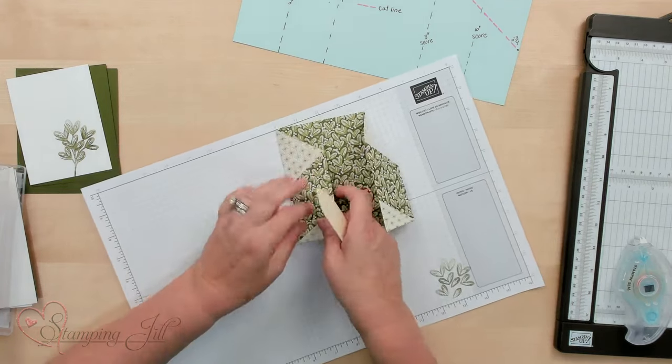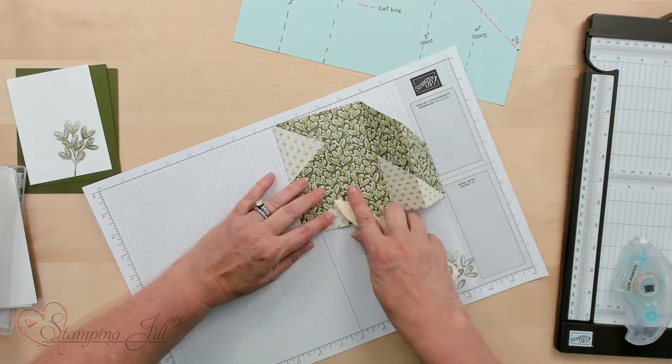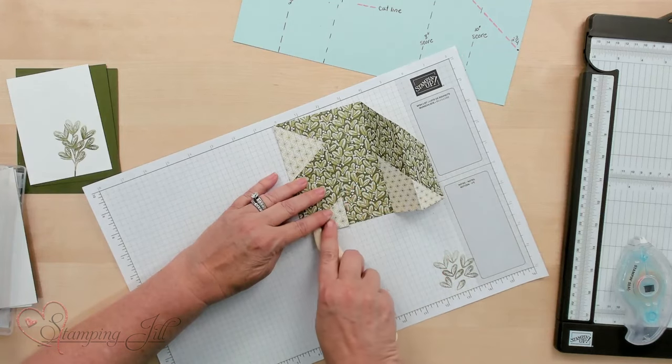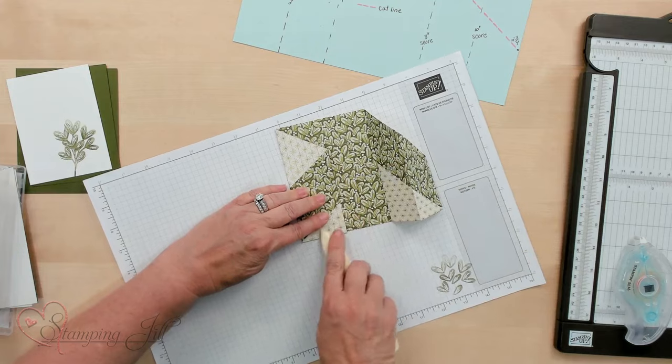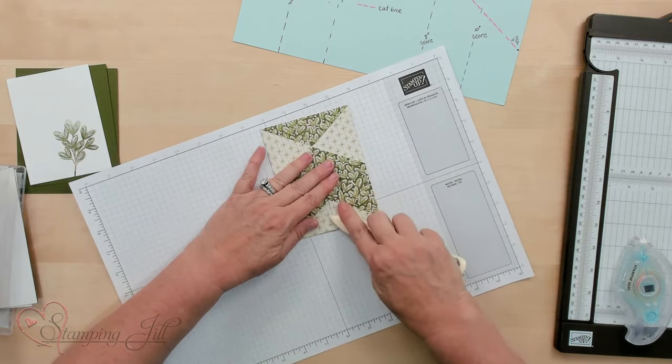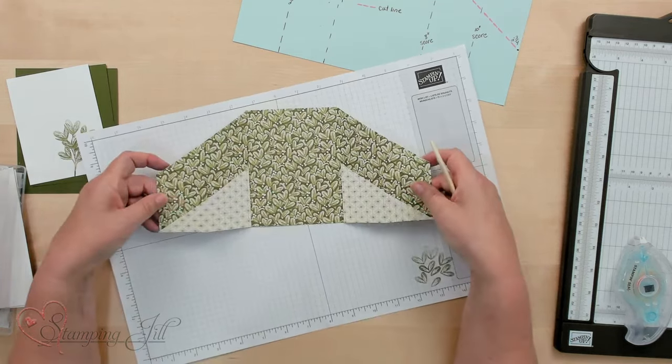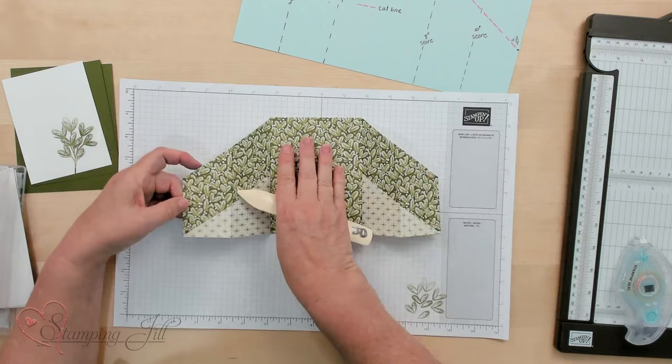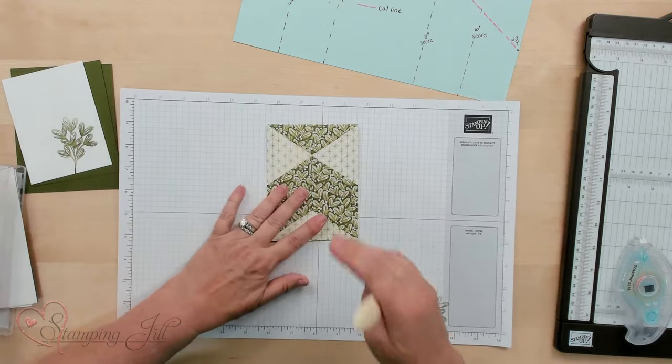Then I'm going to go ahead and crease it again because it's going backwards on the crease that it was before. So that's why you want to take your bone folder and really crease that good on both sides. Then we've got this look. So this is the inside and this is the outside.